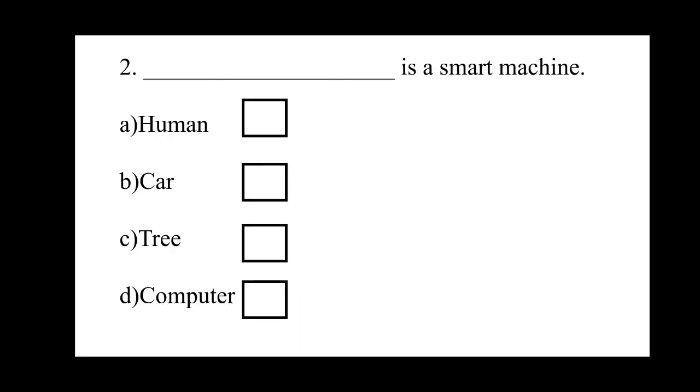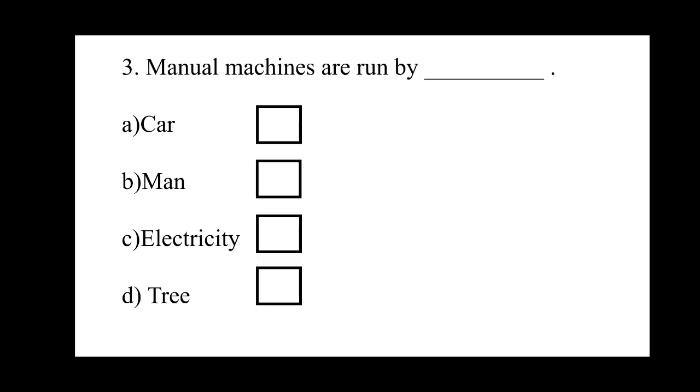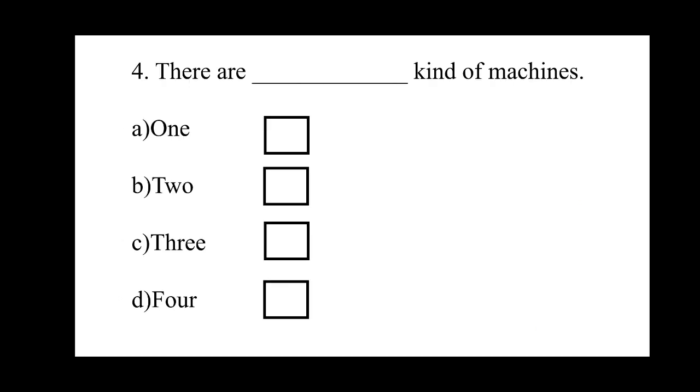Dash is a smart machine. Human, car, tree or computer. Next, manual machines are run by dash: car, man, electricity or tree. Next, there are dash kind of machines: one, two, three or four.